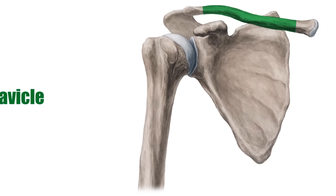The clavicle is a short bone that connects the bones of the trunk to the bones of the arm, and is one of the most commonly fractured bones in the body.